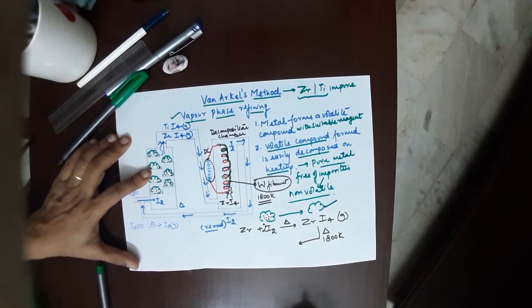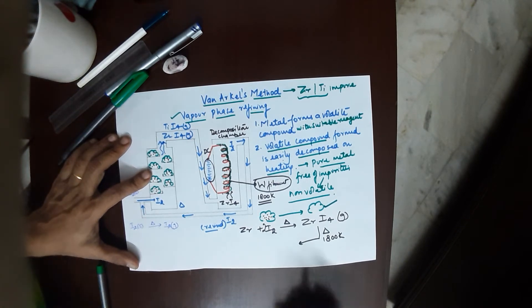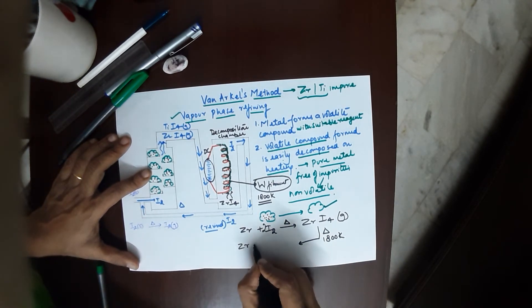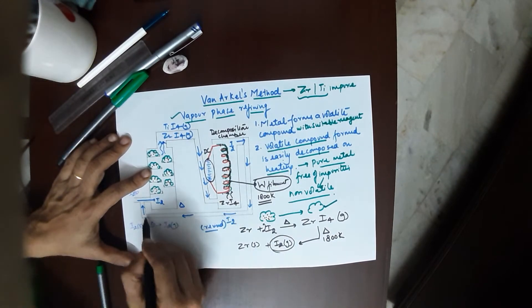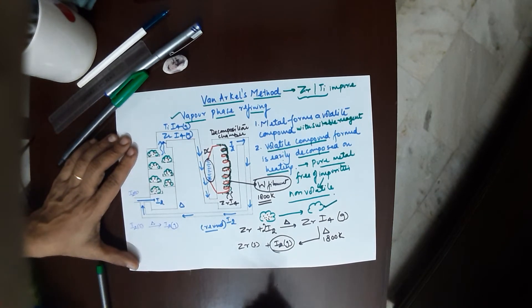This volatile compound is then further heated at around 1800 K. You may not mention the temperature; only heat symbol is enough. This leads to decomposition of zirconium, which is now solid, and your iodine, which is a gas. It can be reused from the second chamber to the first chamber.